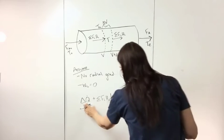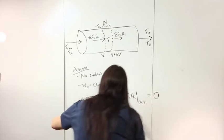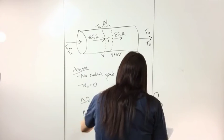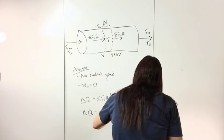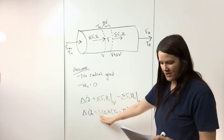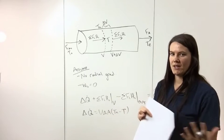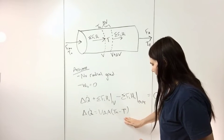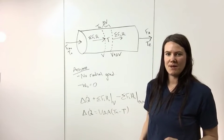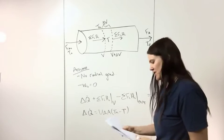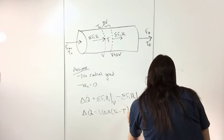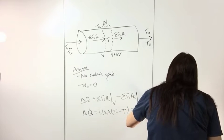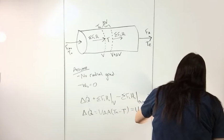Delta Q is equal to U times delta A times (T_A minus T), where U is the overall heat transfer coefficient and delta A is the area over which heat transfer is occurring. If you're unfamiliar with this form, I recommend reviewing your heat transfer textbook. This can be rewritten as U times A times delta V times (T_A minus T).